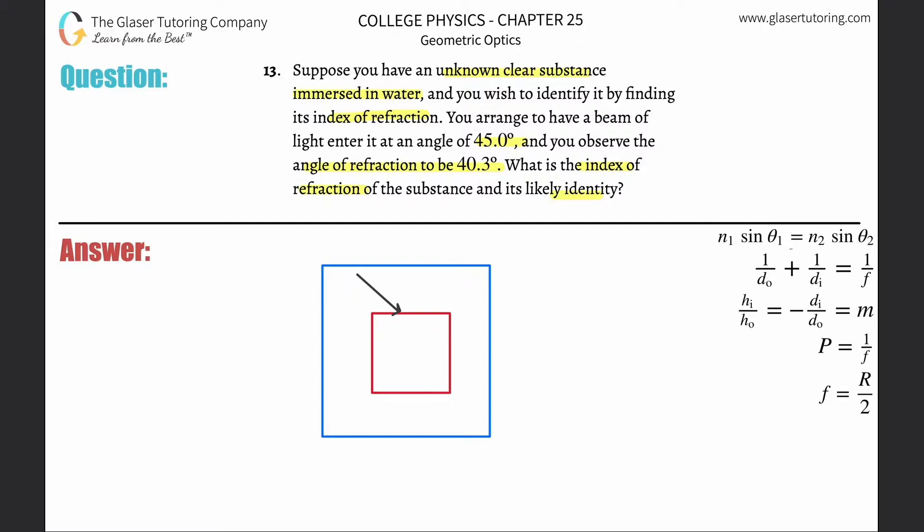In other words, this is 45°, and you then observe that the refracted ray is going to be 40.3°. Now, refracted rays—all these angles are always in reference to the normal unless stated otherwise—so this angle in here is going to be 40.3°.